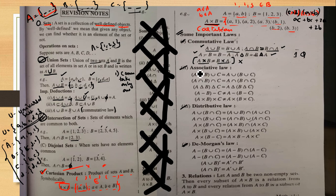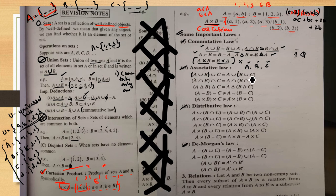Associative property: with sets A, B, C — three sets. A union (B union C) equals (A union B) union C. The bracket changes but the result is the same — that is associativity for union.